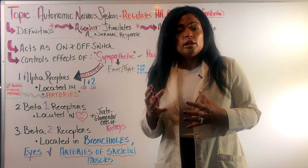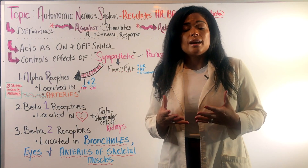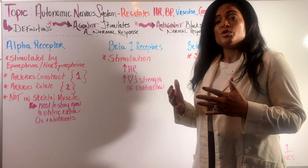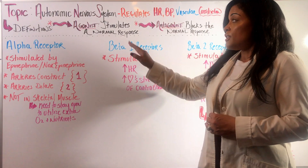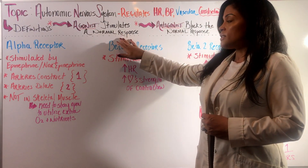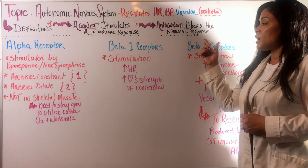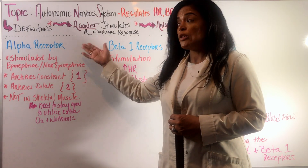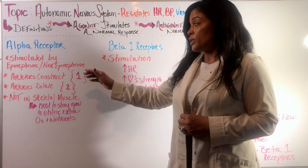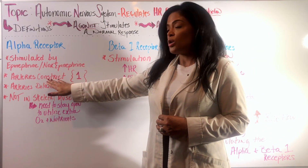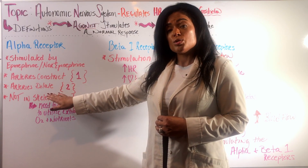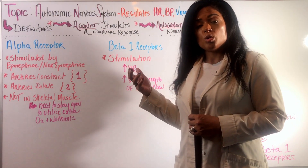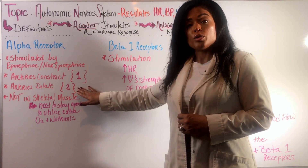Now we're going to go a little more in depth about exactly what you'll see when each of these receptors is activated. Quick review: agonist stimulates a normal response, antagonist blocks a normal response. The normal response of your alpha-1 and alpha-2 receptors is the following. Once stimulated by epinephrine and norepinephrine, your alpha-1 receptors cause the arteries to constrict — raising blood pressure — whereas your alpha-2 receptors cause the arteries to dilate, dropping blood pressure.